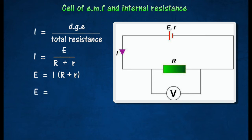The formula can also be written as E equals V plus IR, where V is the potential difference across the external resistor. The difference between the electromotive force and the potential difference represents the potential difference required to send the current through the internal resistance of the cell.